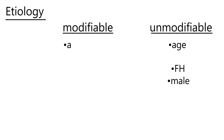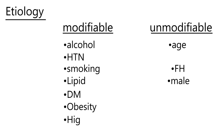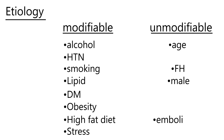The modifiable list is a longer one. It includes alcohol, high blood pressure, smoking, increased cholesterol or hyperlipidemia, diabetes mellitus, obesity, a high fat diet, stress, and any kind of disorder that would lead to emboli — such as atrial fibrillation as an example.